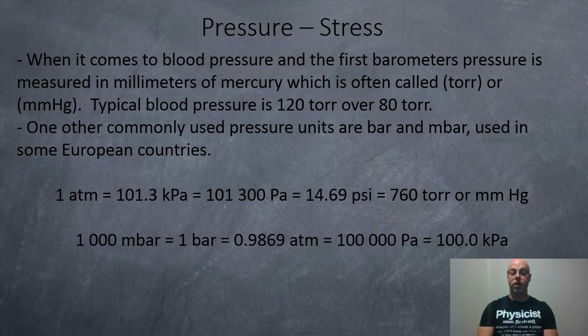So if you want to convert between all these various units, over here on the left we've got the atmosphere, which is 101.3 kilopascals, 101,300 pascals, 14.69 psi, or approximately 760 torr, or millimeters of mercury.